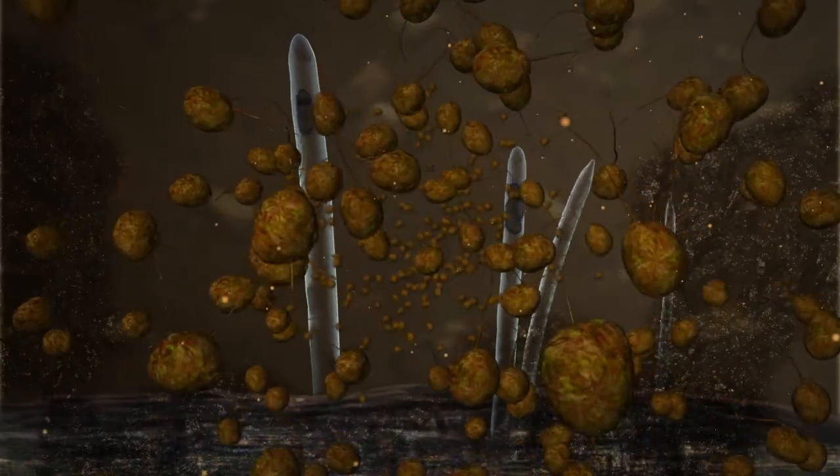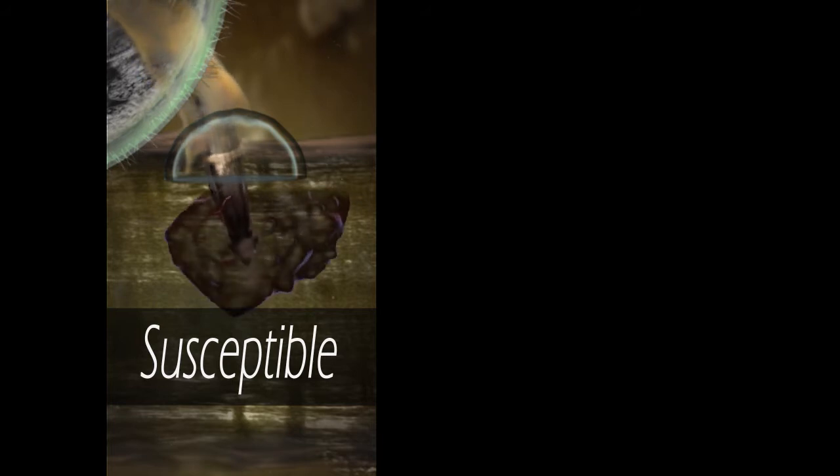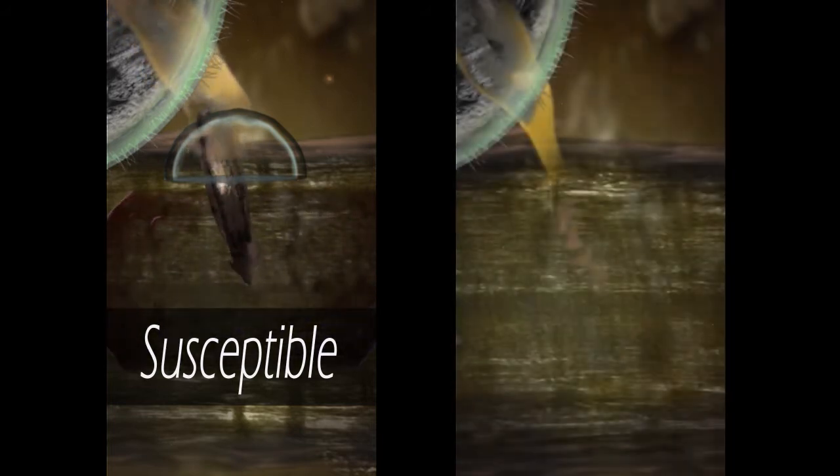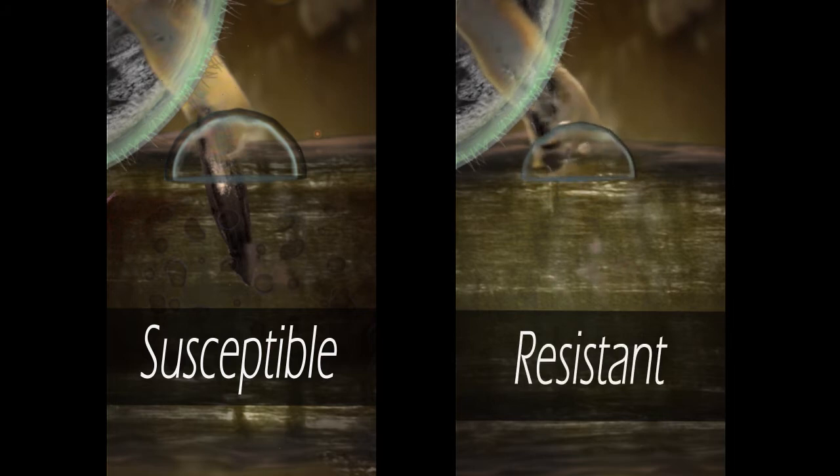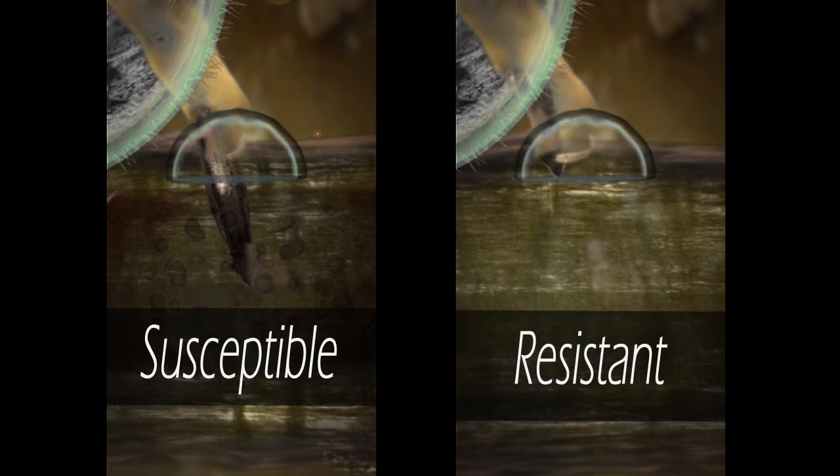This is the stage where clubroot resistance operates. The root hairs of both susceptible and resistant plants are infected by the primary zoospores, but the flush of these secondary zoospores from the root hairs are not able to infect and develop into the root of resistant plants. That is why clubroot does not develop in resistant plants.